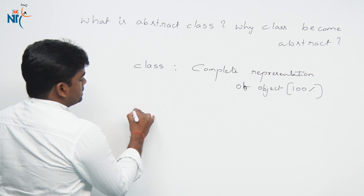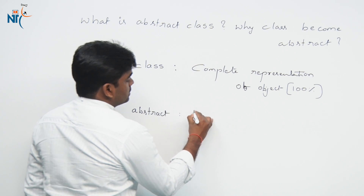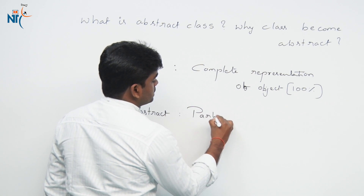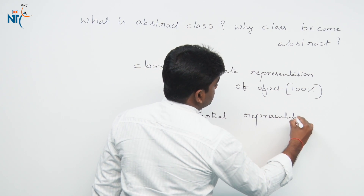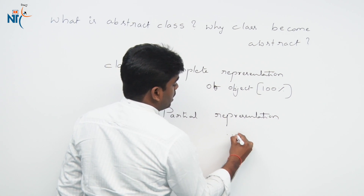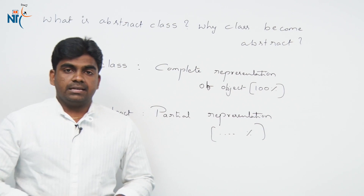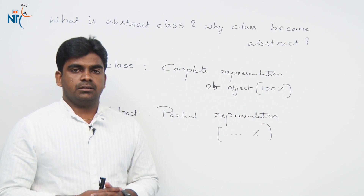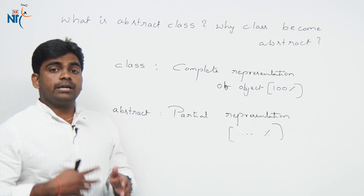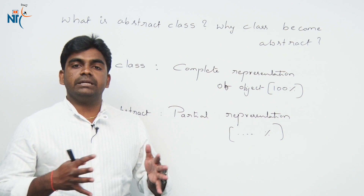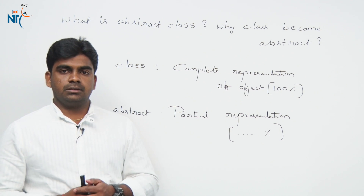What is an abstract class? An abstract class is a partial representation of an object. We cannot specify what percentage — but if a class is unable to represent an object completely, it is a partial representation, and that comes under abstract.